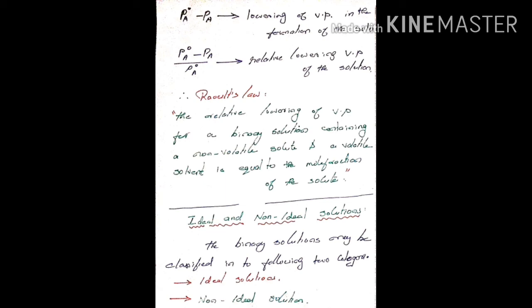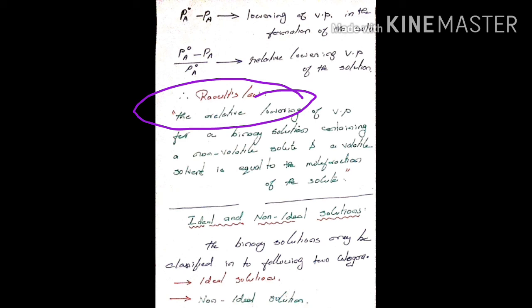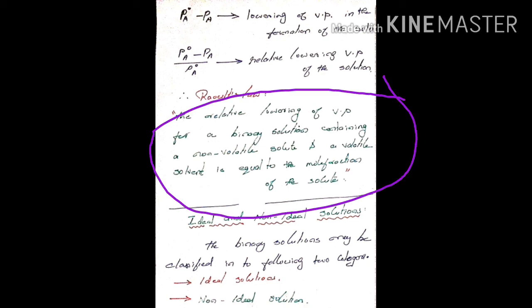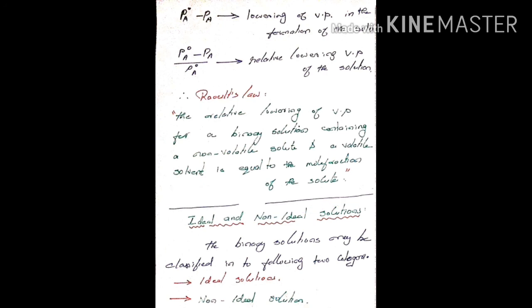We have the relative lowering of vapor pressure. For a binary solution containing a non-volatile solute and a volatile solvent, the relative lowering of vapor pressure is equal to the mole fraction of solute. This is the third statement.